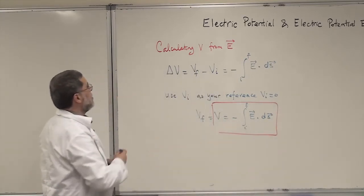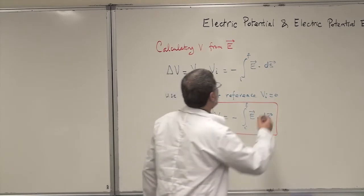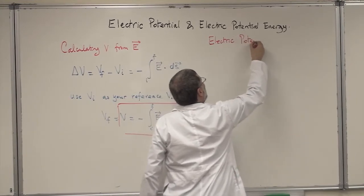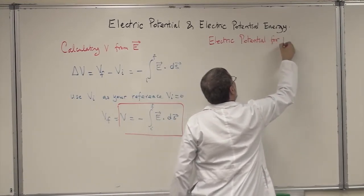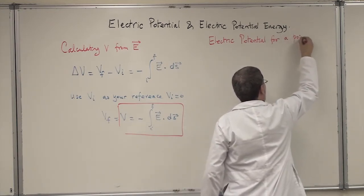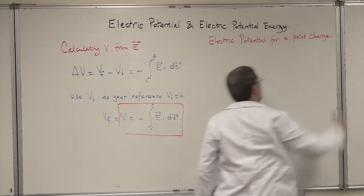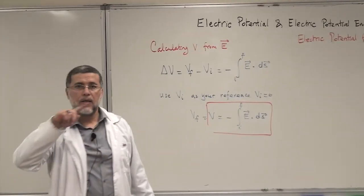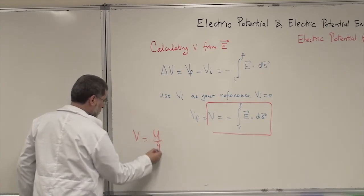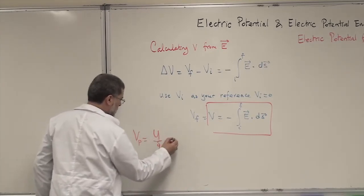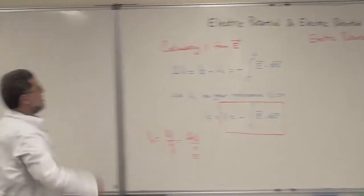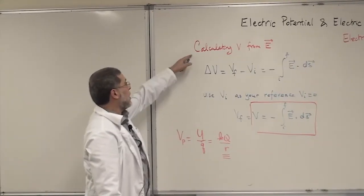Now let me apply this concept to calculate the potential for a point charge — the electric potential for a point charge. We have seen this before, but I want to show it in a different way. Remember the way we defined V: it was U over Q. V at point P, if you remember, was K Q over R. I'm going to show you again how to find this using this concept of calculating V from E.